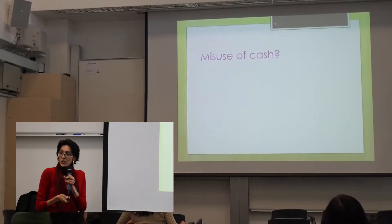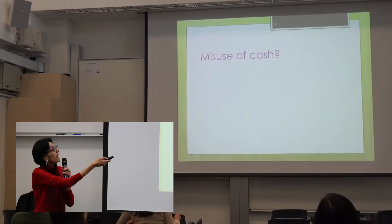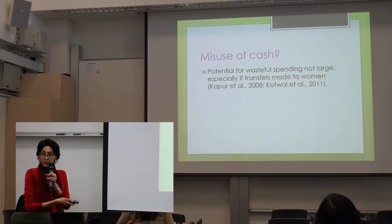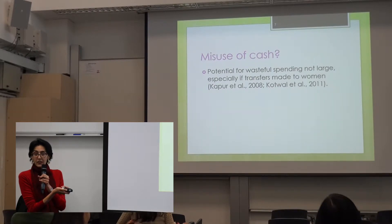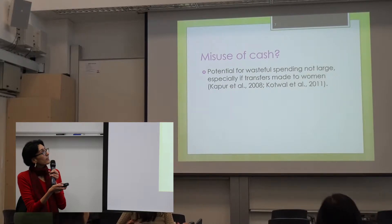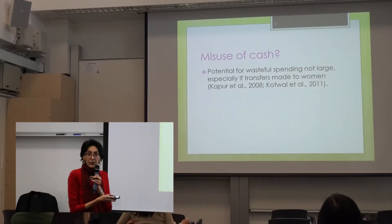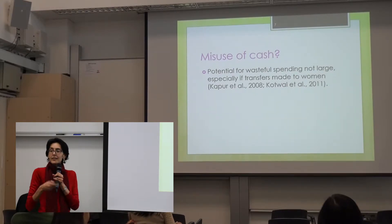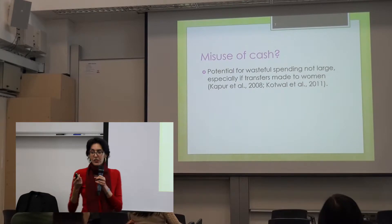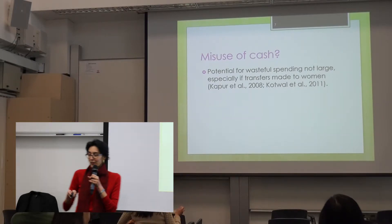The first issue is what is more efficient — giving subsidies in cash or using the PDS. The second issue the debate centers around is the misuse of cash. Those saying unconditional cash transfers are fine argue that there is not a very large potential for wasteful spending or misuse. Several are actually advocating to give the cash to the women or the mothers, which goes back to general development literature showing that women tend to spend more of the money under their control for the benefit of the household.